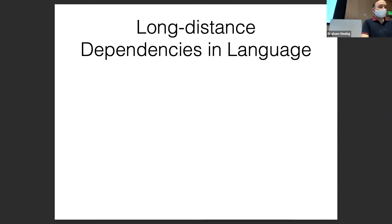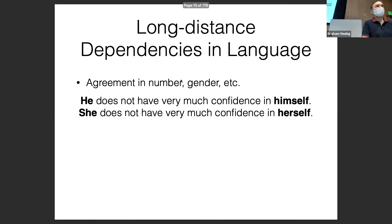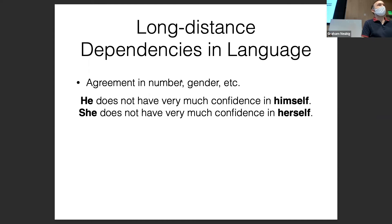Another feature of language is that there are long-distance dependencies. For example, we could have agreement in number or gender — a syntactic property we'd like to handle. For example, 'he does not have very much confidence in himself' versus 'she does not have very much confidence in herself.' If you mixed those up, it would be confusing.